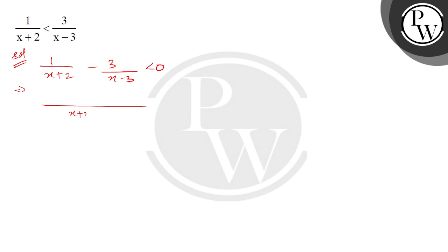Let me solve this manually. Take common denominator x plus 2 into x minus 3. We get x minus 3 minus 3 times x plus 2, all less than 0. Okay.